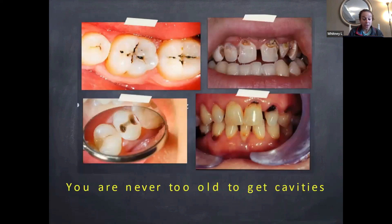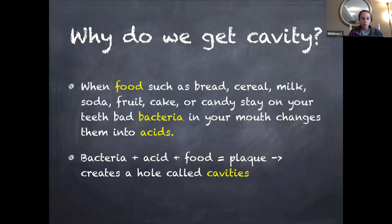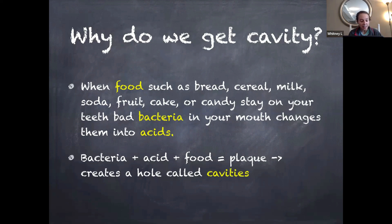It is important to note you are never too old to get cavities. The people in these images are of varying ages and all present with visible cavities — it can happen to anyone without proper oral hygiene practices. We get cavities when food such as bread, cereal, milk, soda, fruit, cake, or candy stays on your teeth.